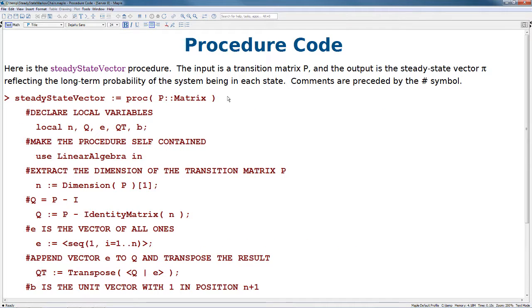Here is the steady state vector procedure. The input is a transition matrix P and the output is the steady state vector pi reflecting the long-term probability of the system being in each state. In this code, comments are preceded by the hashtag symbol.